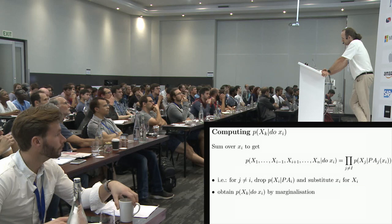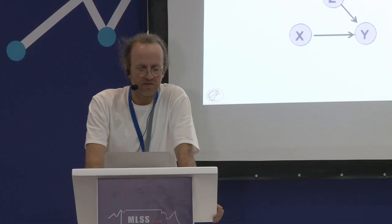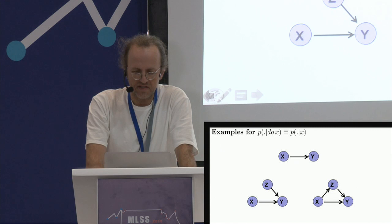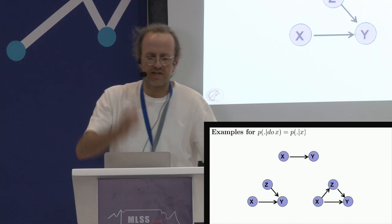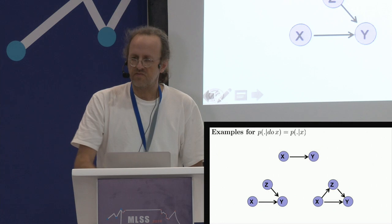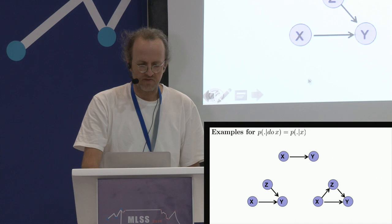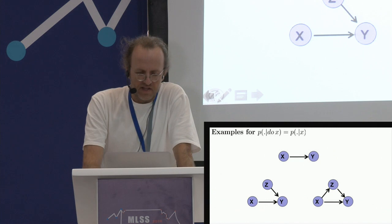This leaves a product over all remaining terms, and we can continue marginalizing out more variables to get other do-probabilities. Let's look at examples where the do-probability coincides with the conditional probability. This happens in all cases where all the dependence between x and y is due to the causal influence of x on y — whether direct or indirect. As a simple exercise, I recommend taking the definition and applying it to these cases by writing down the causal factorization.